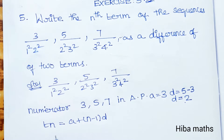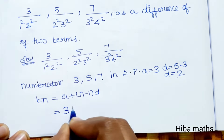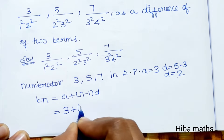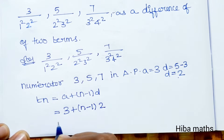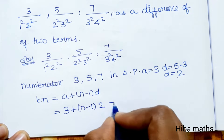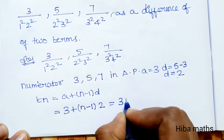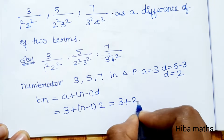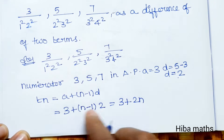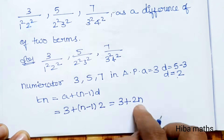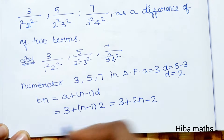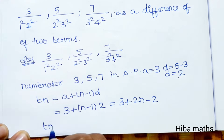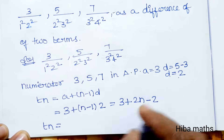Substituting: nth term = 3 + (n−1)·2 = 3 + 2n − 2. Simplifying, tₙ of the numerator = 2n + 1.